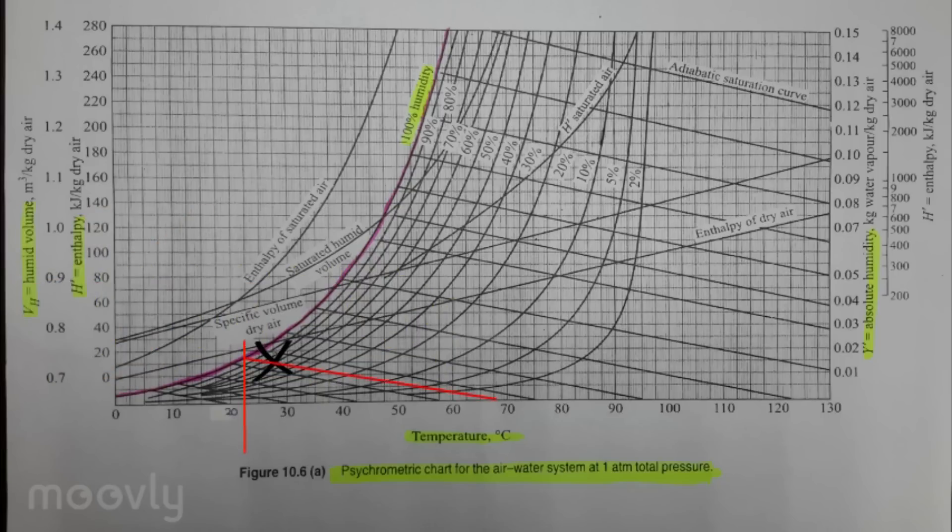Read enthalpy when the wet bulb temperature vertical line intersects with the enthalpy of saturated air curve. Enthalpy is around 64 kJ per kg.